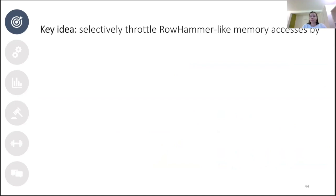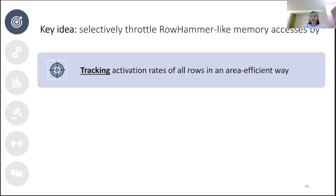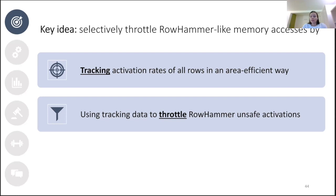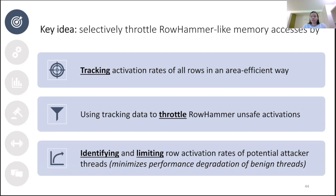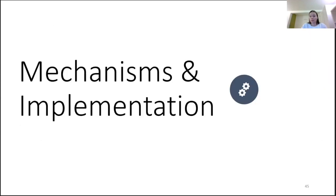There are already quite a lot of solutions out there, but we're looking for a better one — an efficient and scalable solution to rowhammer that can be implemented without any knowledge of or modification to DRAM internals. The key idea is to selectively throttle rowhammer memory accesses: first track the activation rates of all DRAM rows in an area-efficient way, then use that data to throttle rowhammer-unsafe row activations. We also identify the threads that a rowhammer attack can originate from, limit their ability to issue new memory requests, and free up memory bandwidth for benign threads.